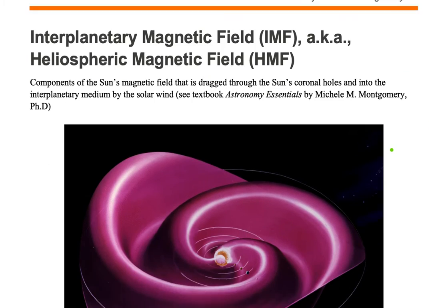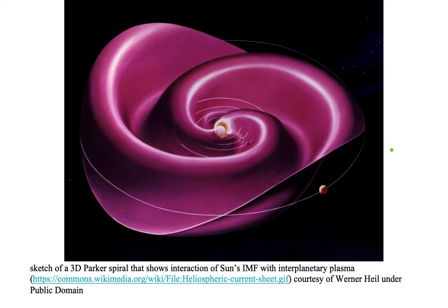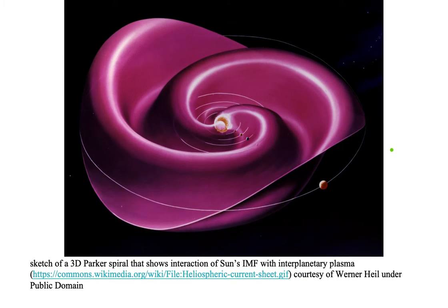Let's take a look at the Parker spiral. In this version, we have a three-dimensional Parker spiral. The Sun is located in the center, and we have a couple of coronal holes through which the Sun's magnetic field is being dragged by the solar wind. Notice that it starts out straight, and then we have this curve.